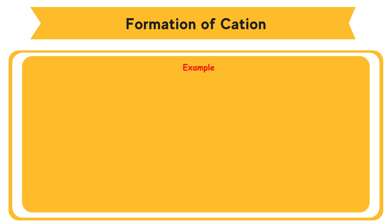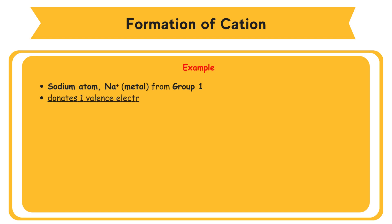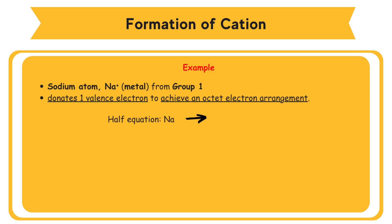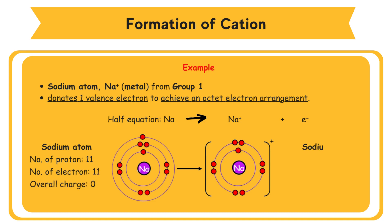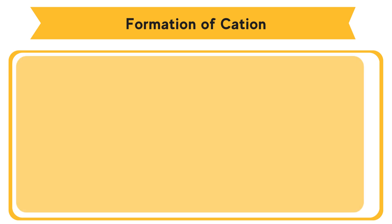Example: formation of Na+ cation. Sodium atom, a metal from Group 1, donates one valence electron to achieve an octet electron arrangement. Half equation: Na → Na+ + e⁻. Sodium atom: number of protons = 11, number of electrons = 11, overall charge = 0. Sodium ion: number of protons = 11, number of electrons = 10, overall charge = +1.